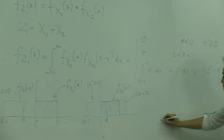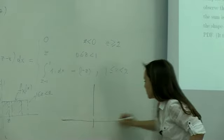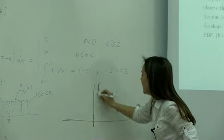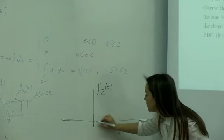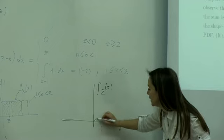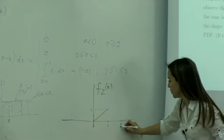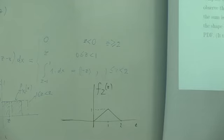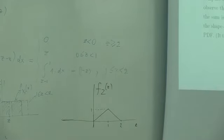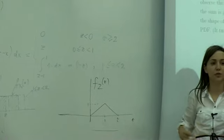Let me plot this — I found my black marker just in time. fz of z as a function of z looks like a triangle. From 0 to 1 it increases with a slope of 1, and from 1 to 2 it decreases with a slope of 1. The original functions both had a support of 1; when we convolve them, the support of the resulting function increases to 2, which makes sense because adding x and y gives a range of 0 to 2.